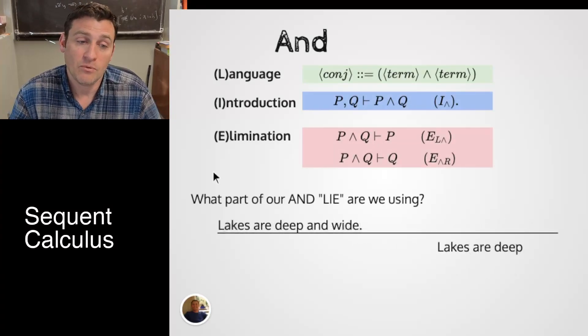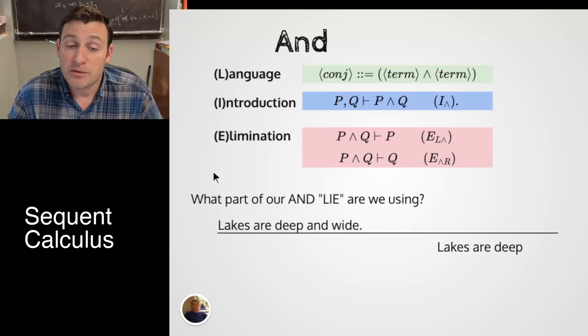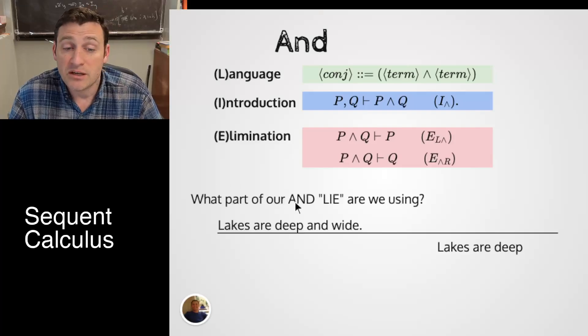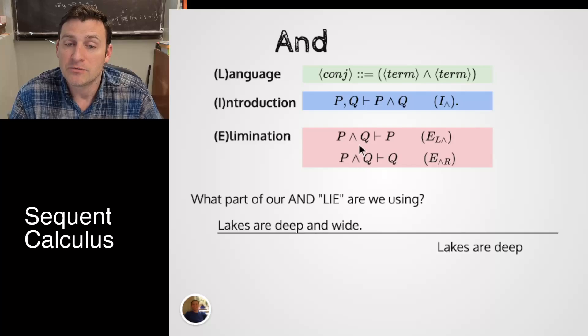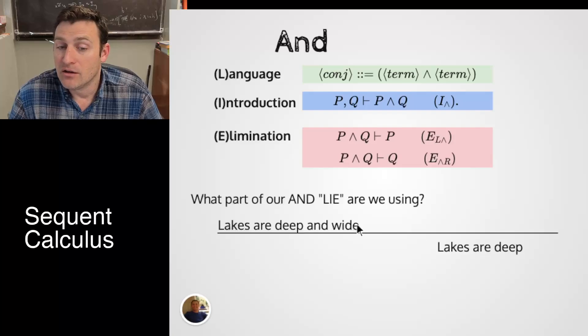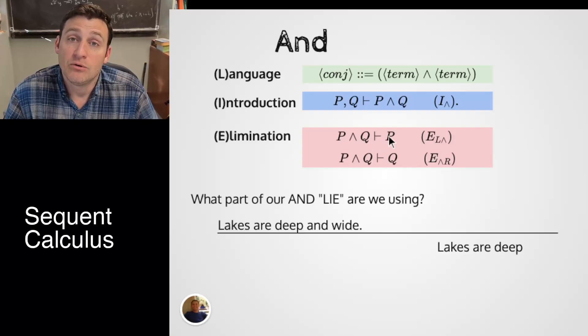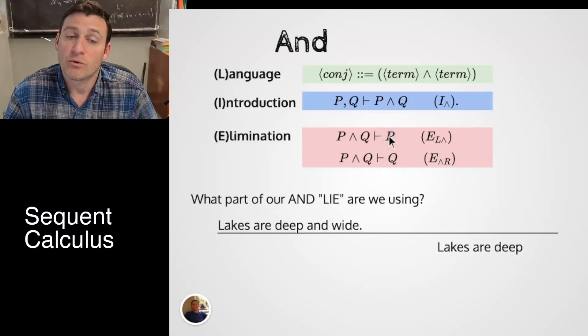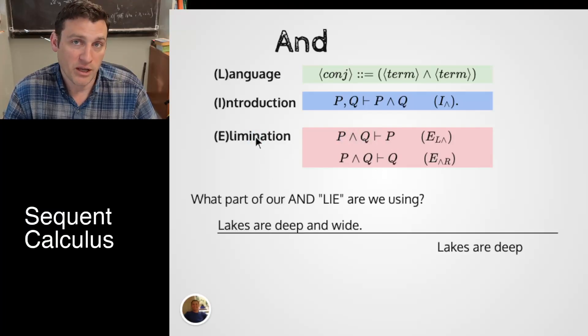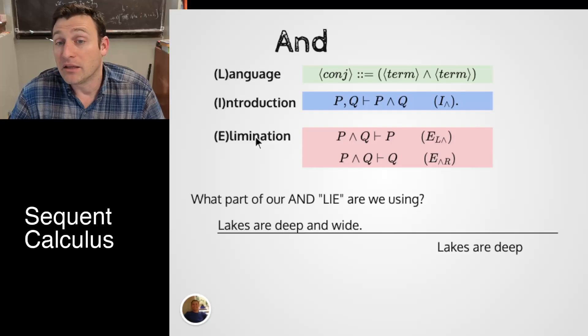Let's see another example. What part of the LIE acronym are we using when we say lakes are deep and wide, therefore lakes are deep? Well, we see it in words here instead of symbols. The word AND is playing the role of a P AND Q. And what we've done is gotten rid of the AND. And we've also kept just part of it. Lakes are deep. So this is a P AND Q producing one of the terms. In this case, the first one, we'll call it P. So we're saying that P AND Q entails P. We're using one of our elimination rules. In this case, the one on the left. The elimination rule on the right would have given us wide. Lakes are wide.